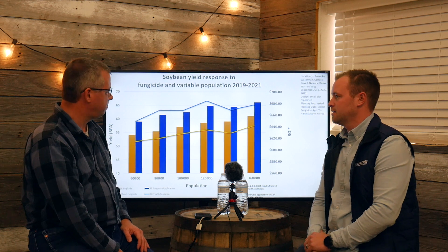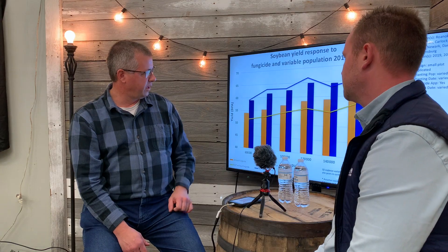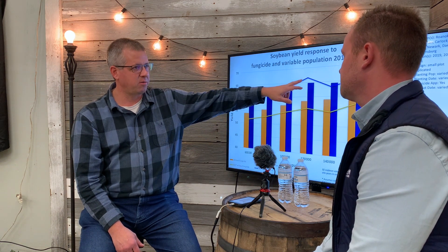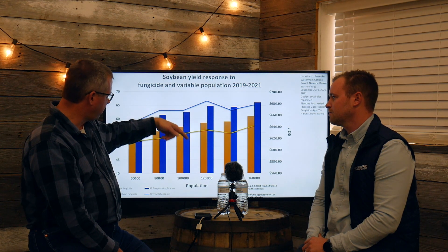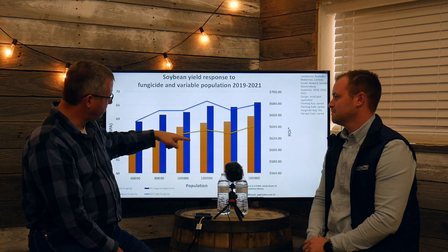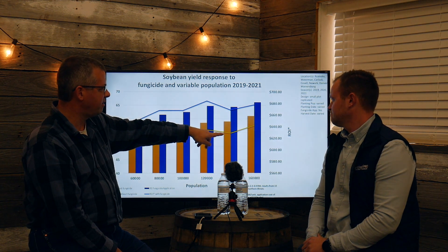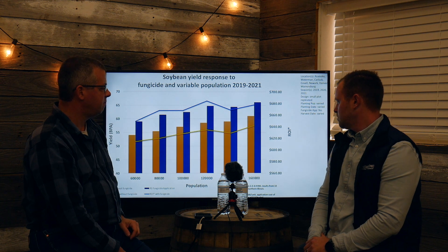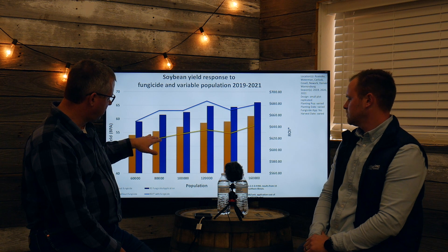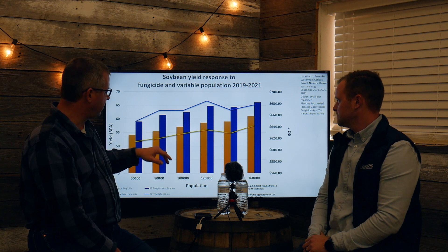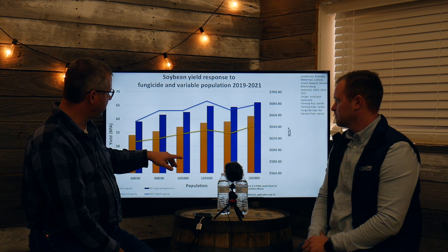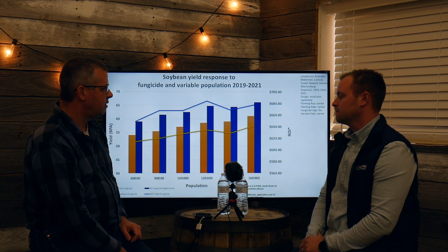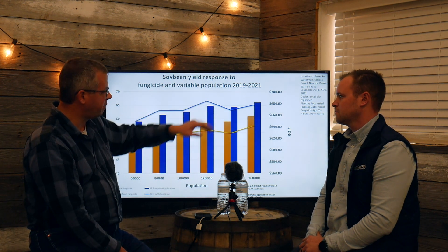So regardless of population planted, fungicide always paid over the last couple of years — that's what this data bears out. When looking at a fungicide application, maximum ROI is at 120,000 population. We still see yield increases at higher populations, but not enough to give us additional benefit when we factor in the cost of seed. Without fungicide, you have to go to 160,000 to get maximum ROI, but you're still leaving $40 on the table by not applying fungicide.